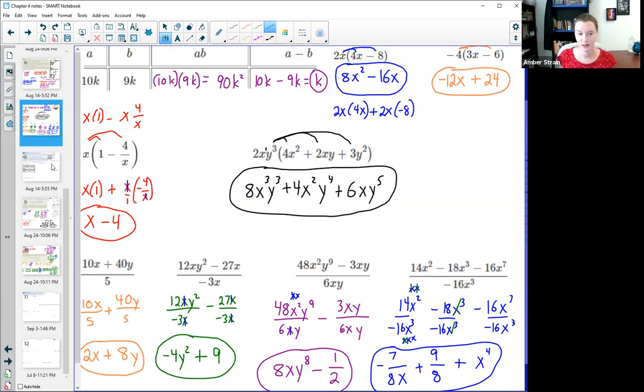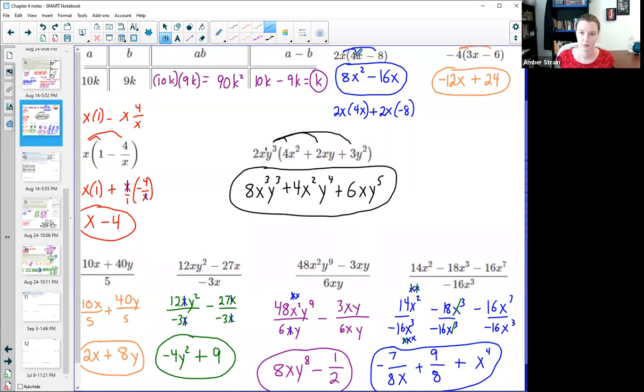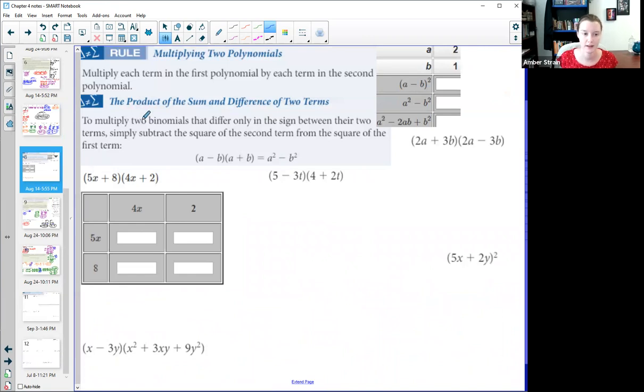The only thing that's different about multiplying a polynomial to another polynomial is we have to be careful to make sure each term goes to each term. This could be visualized in a two by two grid like this right here. When we distributed a single term, we made sure that the 2x went to both the 4x and the negative 8. When I have something like this, I have to make sure that the 5x goes to the 4x, the 5x goes to the 2, the 8 goes to the 4x, and the 8 goes to the 2.